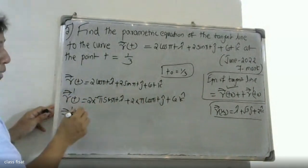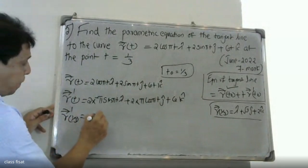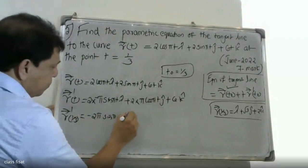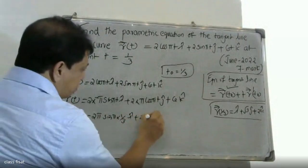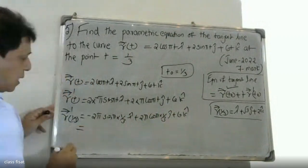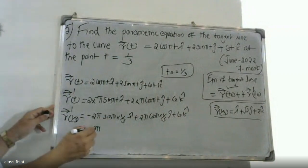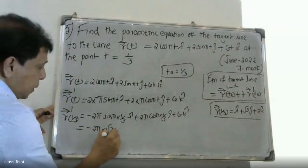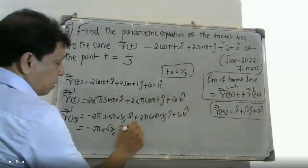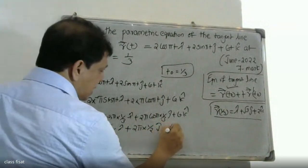Now substitute t₀ = 1/3 into r'(t). sin(π/3) = sin(60°) = √3/2, so -2π × (√3/2) = -π√3. cos(π/3) = cos(60°) = 1/2, so 2π × (1/2) = π. And the k component is 6.